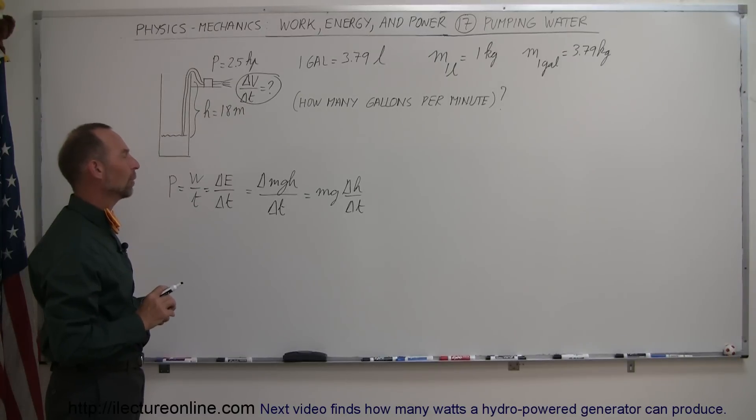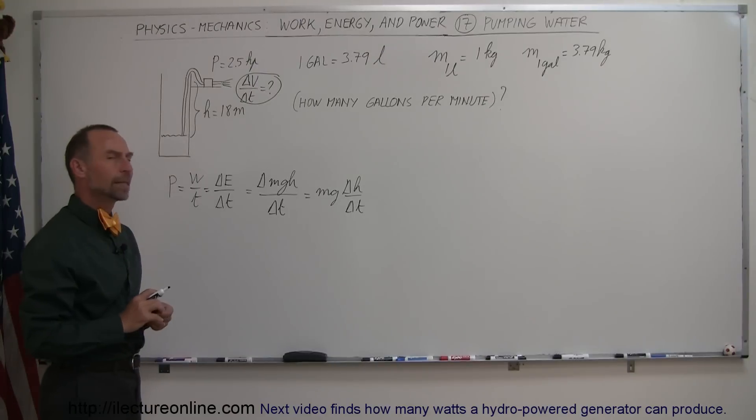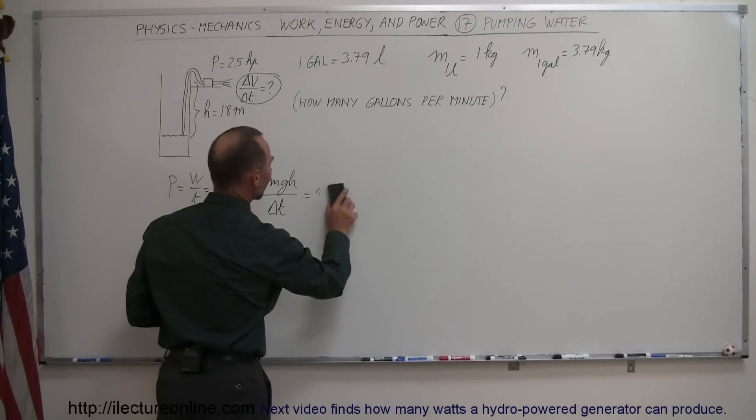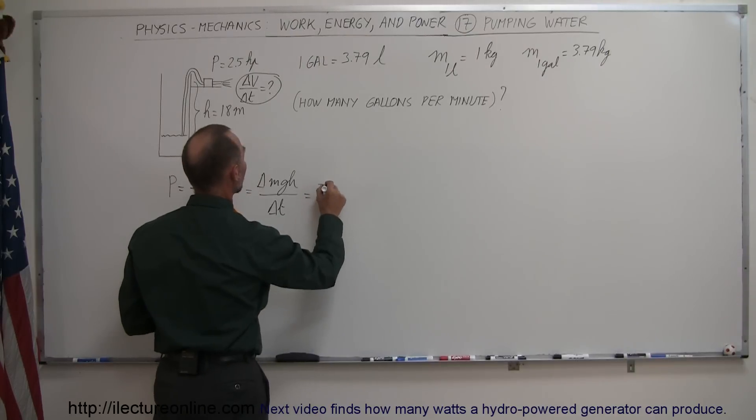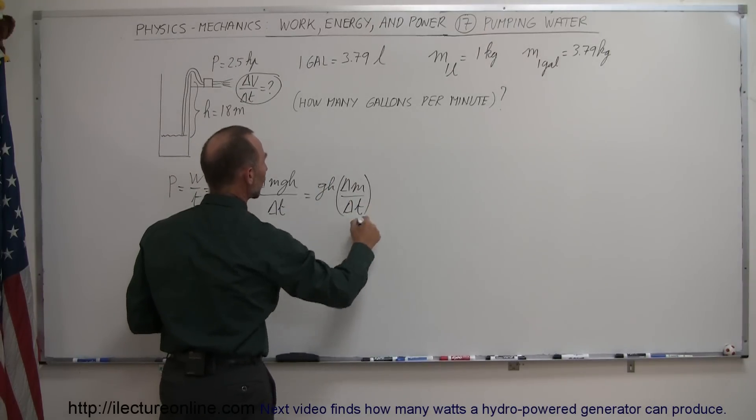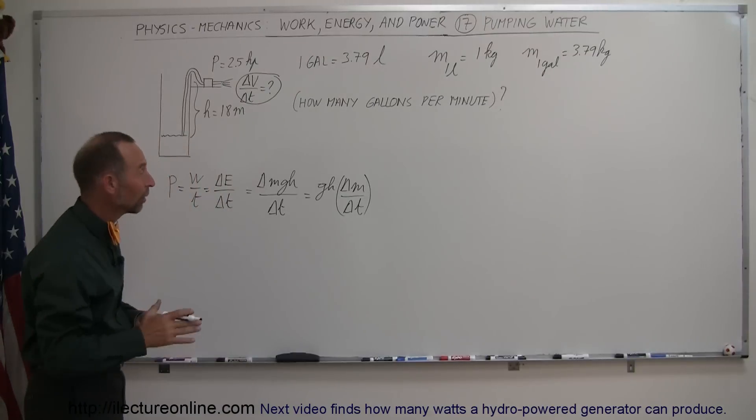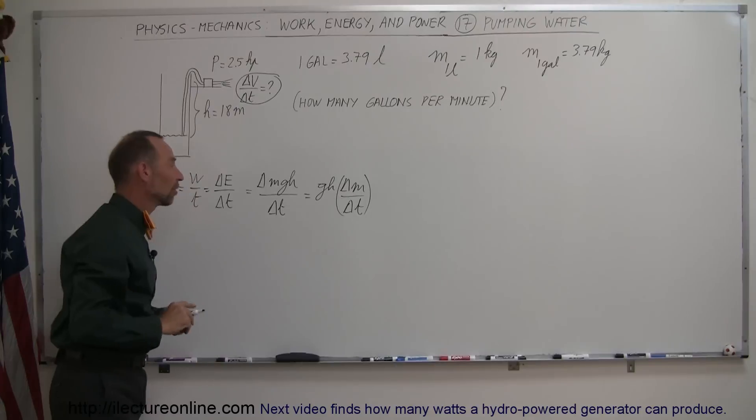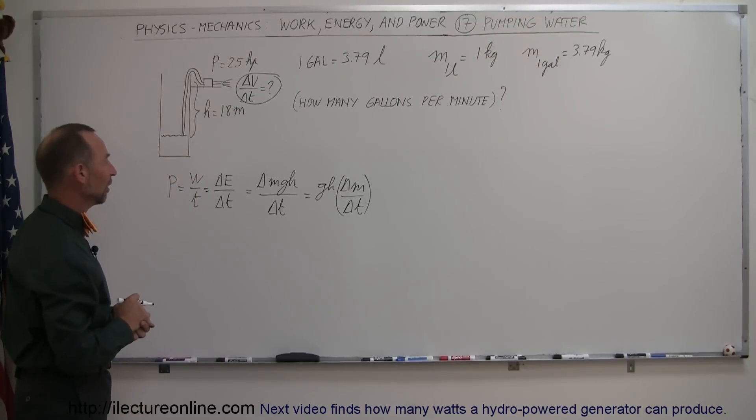Actually, you know what? I think what I'm going to do here instead, instead of doing it like that, I'm going to assume that M is the unknown. So I'm going to pull the G and the H out and say the delta mass over time is the thing that we're looking for. How much mass of water can we lift 18 meters against the force of gravity in a certain amount of time? That makes more sense.